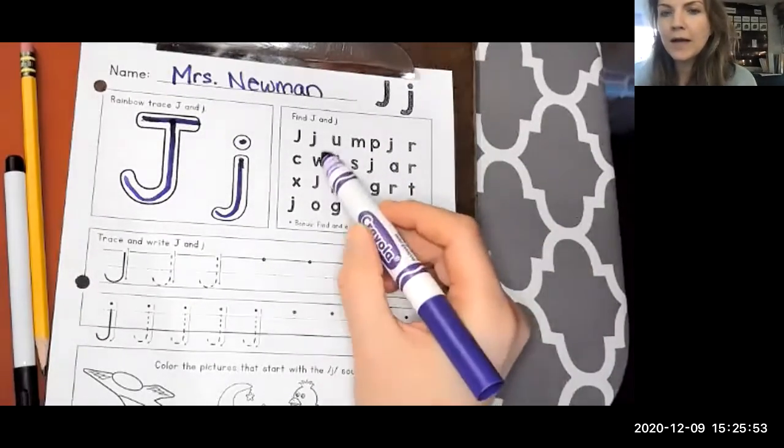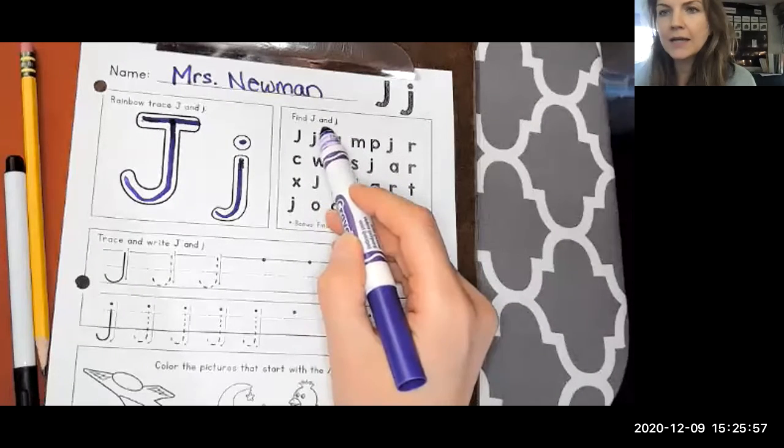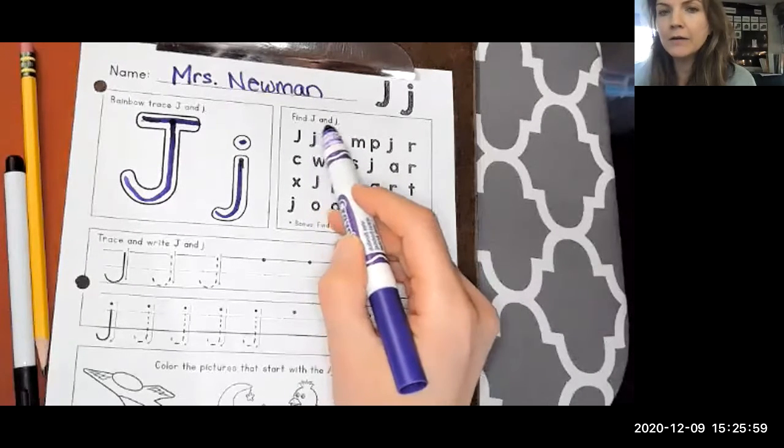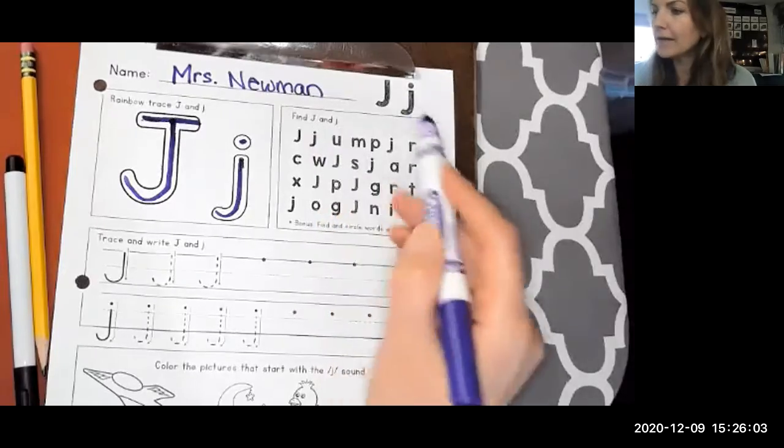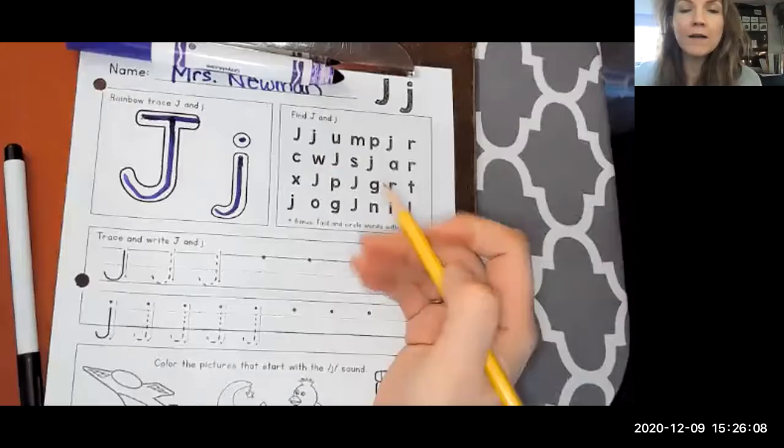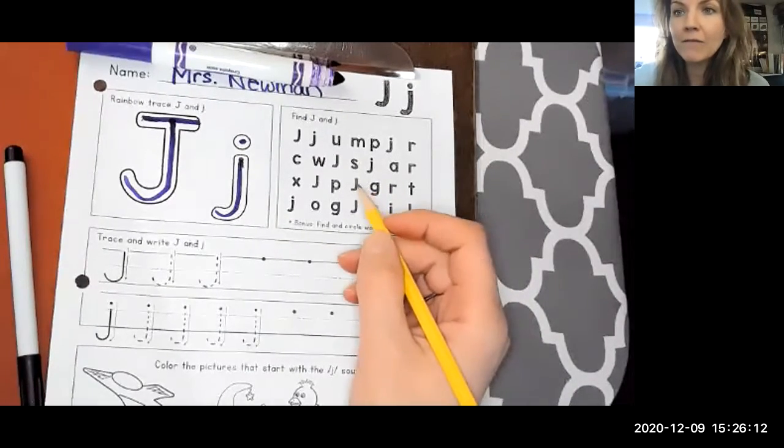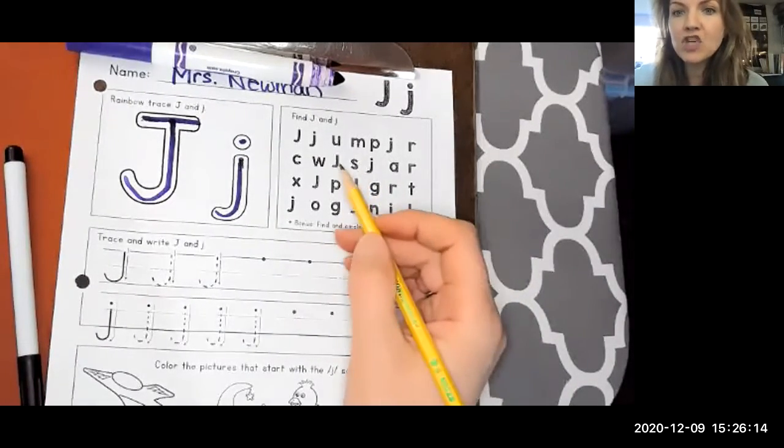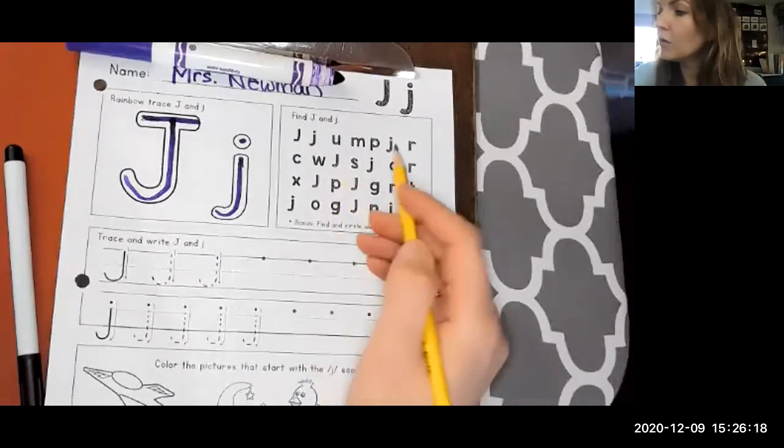So go ahead and look around for those J's. Find big J and little J, capital letter and small, lowercase, uppercase, lowercase. And while you look around, I'm going to go ahead and identify the words. Now, if you don't want to, if you want to find the words yourself, don't look or pause the video and find the words yourself or find the J's if you don't want. Now, if you do want to watch Mrs. Newman, you can.